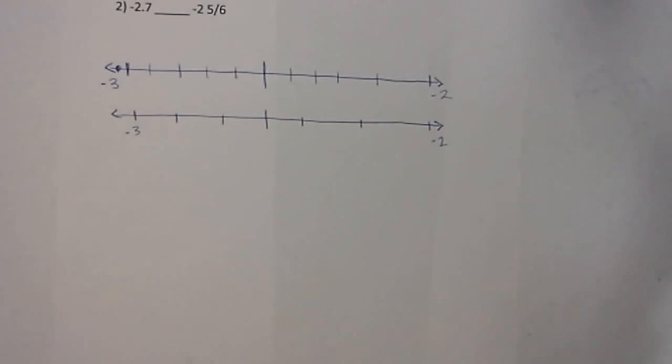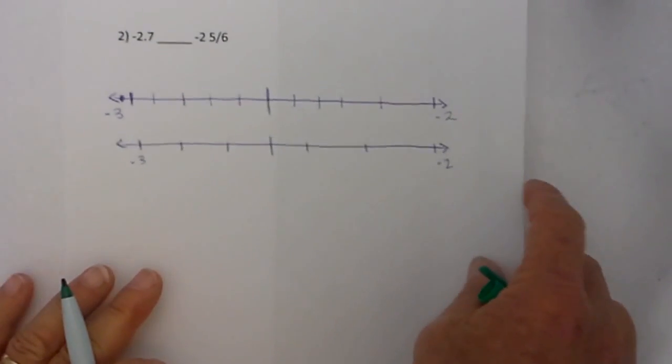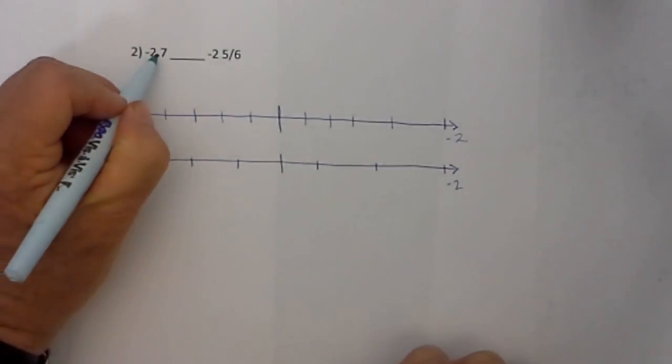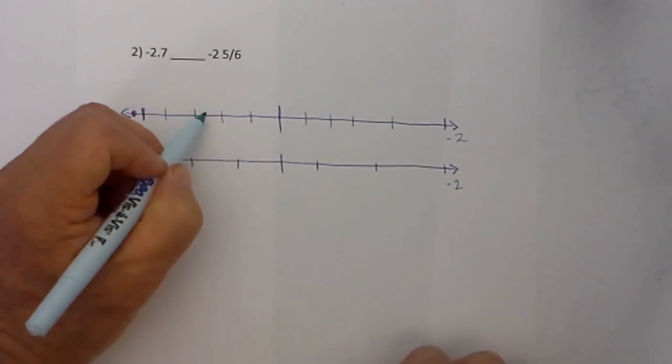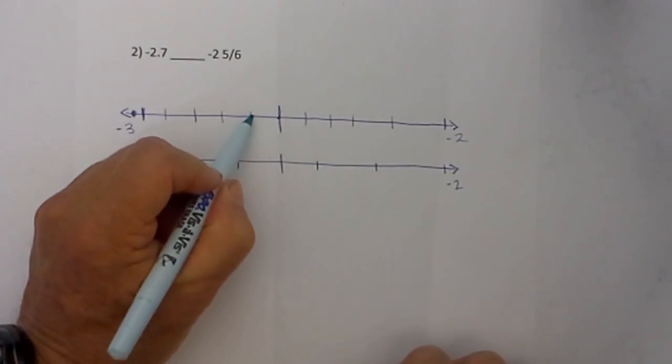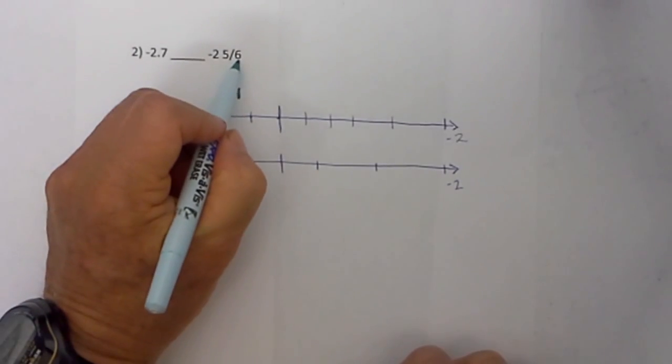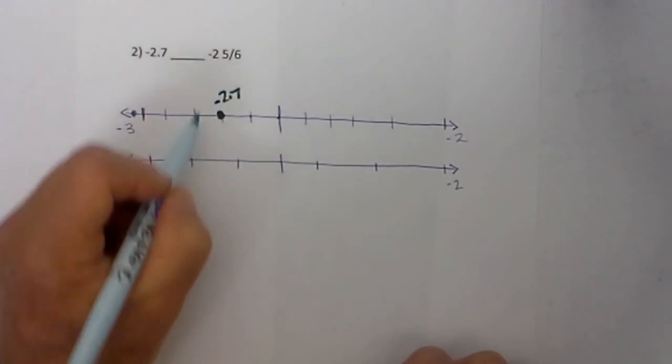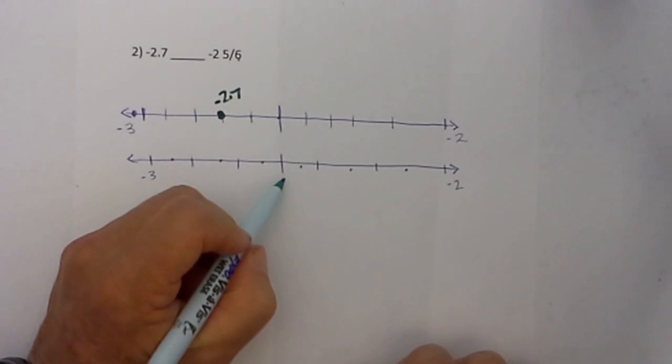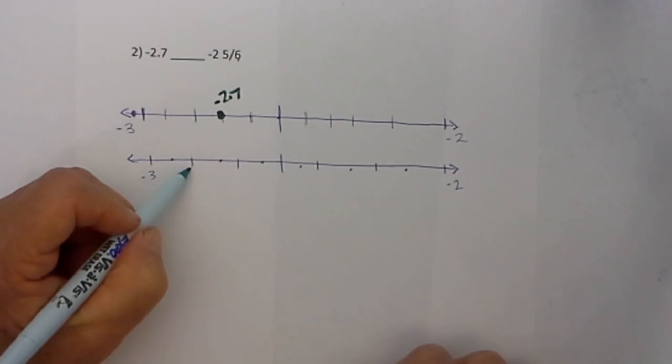And finally, let's do one more example. I have two numbers: negative 2.7 and negative 2 and 5 sixths. I will draw two number lines, and I went ahead and did this ahead of time. I know whenever I have tenths, I will divide it into 10 equal sections: 1, 2, 3, 4, 5, 6, 7, 8, 9, 10 equal sections. 2.7 will be 2.5, 2.6, 2.7 is here, so that is negative 2.7. And then the denominator gives me a clue as to how many sections to divide this section into, and that is 6, so that is 1, 2, 3, 4, 5, 6. So I will plot 2 and 5 sixths. Here is 2 and 3 sixths, 2 and 4 sixths, and so this would be negative 2 and 5 sixths.